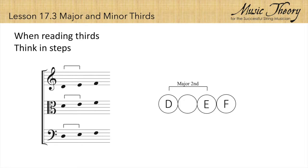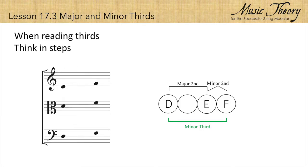D to E is a major second. E to F is a minor second. And we know that a minor second plus a major second equals a minor third. So D up to F must be a minor third.